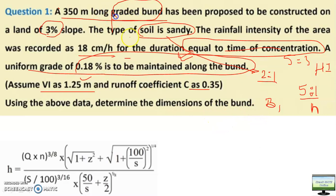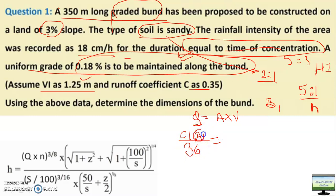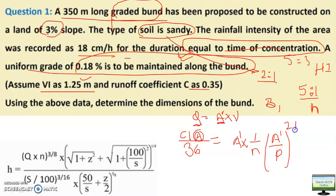For a graded bund you need to calculate discharge Q equal to area into velocity. How to calculate the discharge: that is CIA/36. Here the area A-dash in Manning's equation is A-dash into (1/n) × r^(2/3) × s^(1/2), where r = A/P, and s is the longitudinal slope given as 0.18%. This A-dash and the catchment area A are different — this A-dash is the cross-sectional area where you dispose the water.